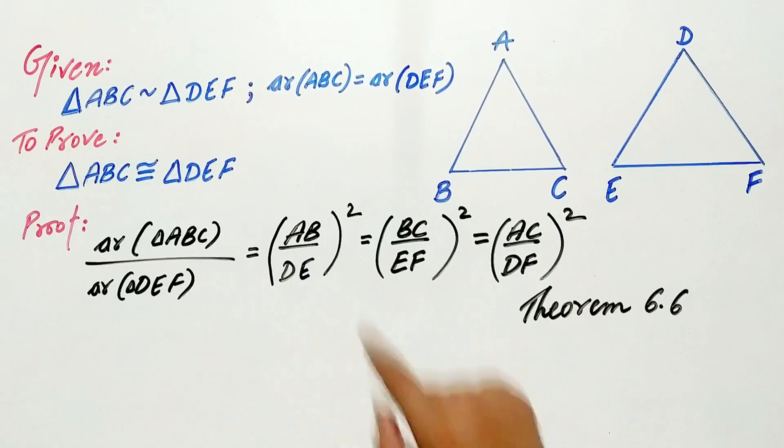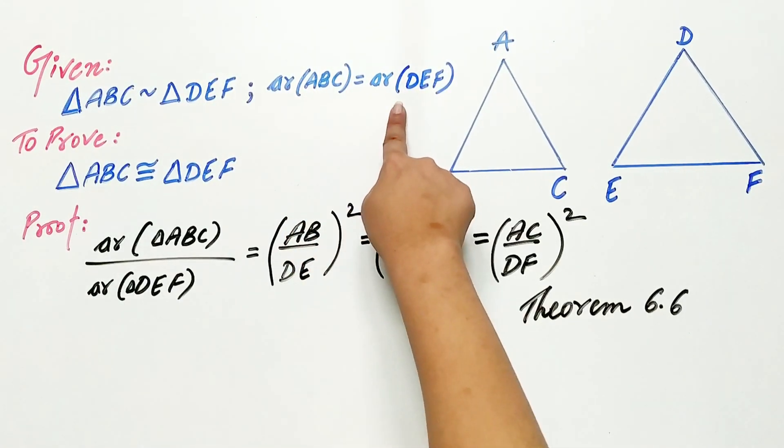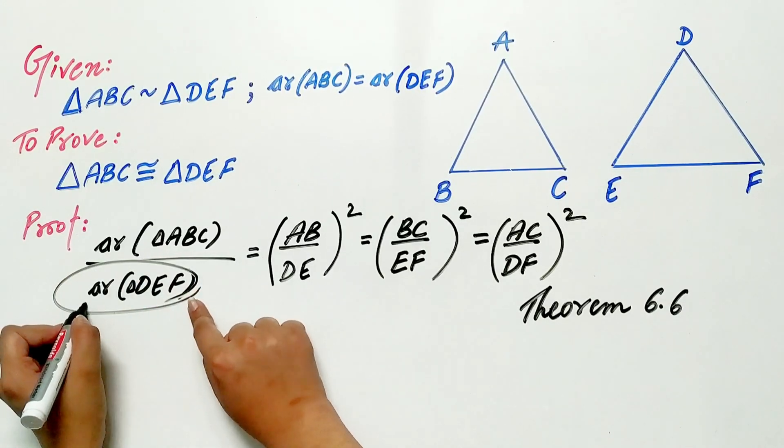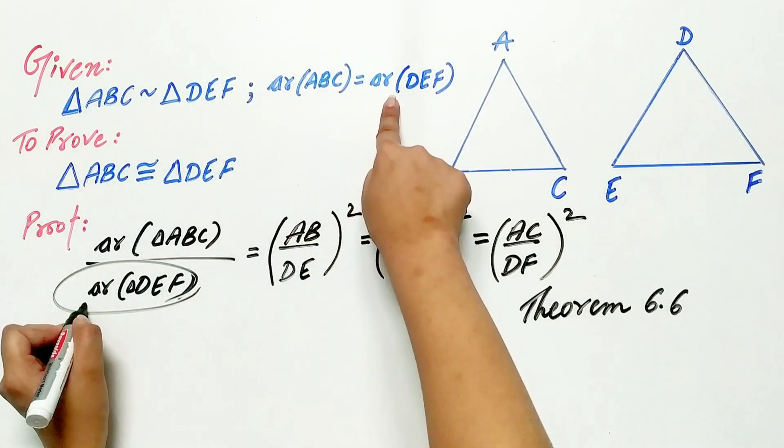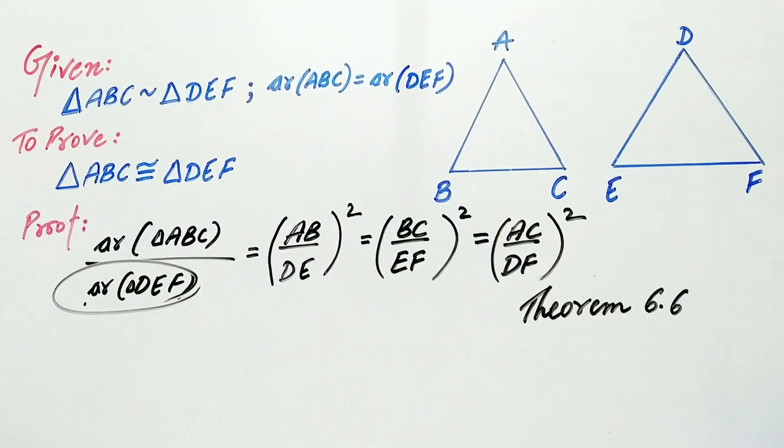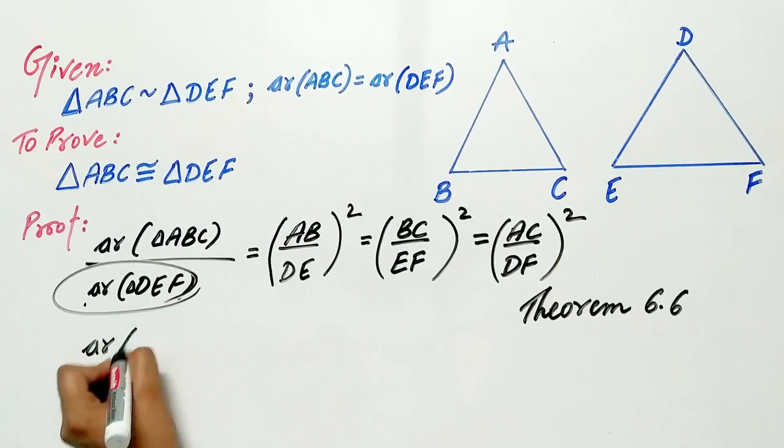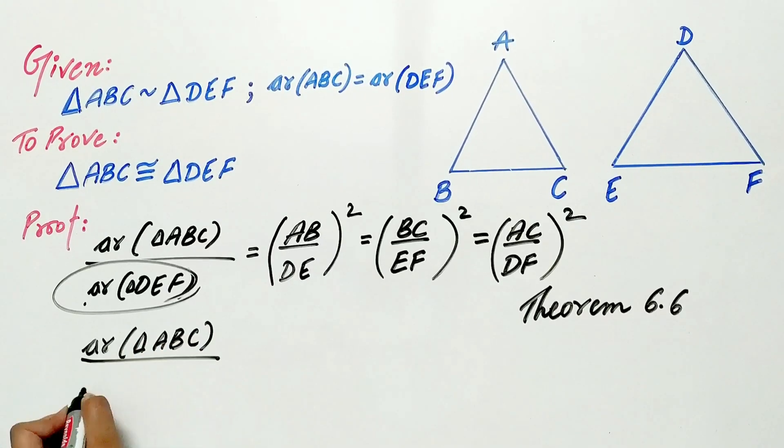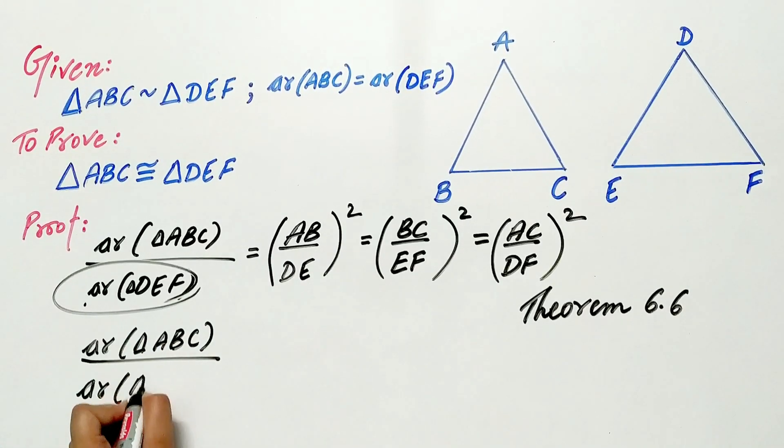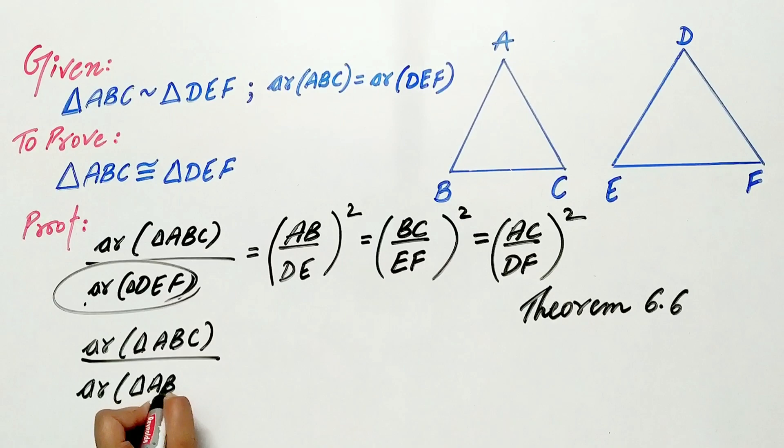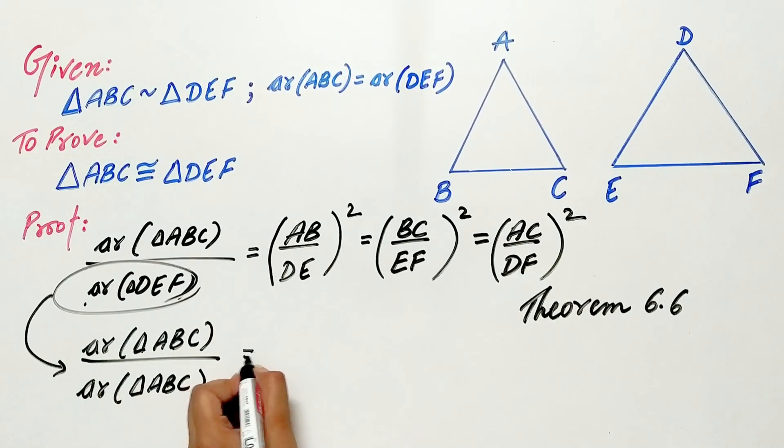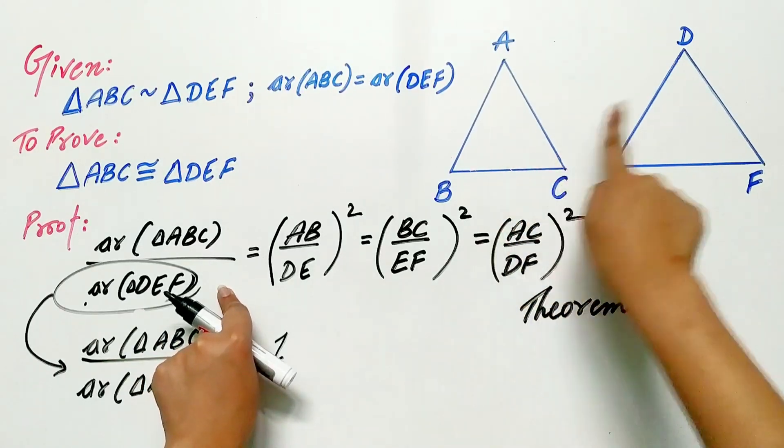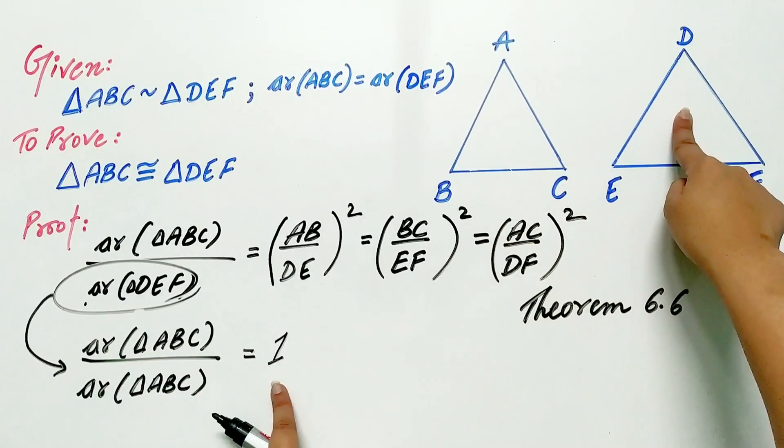Now, area of triangle ABC is equal to area of triangle DEF. Can I substitute area of triangle ABC in place of DEF? Yes. Hence, area of triangle ABC by area of triangle ABC is equal to 1. That means the ratio of the area of the triangles is equal to 1.